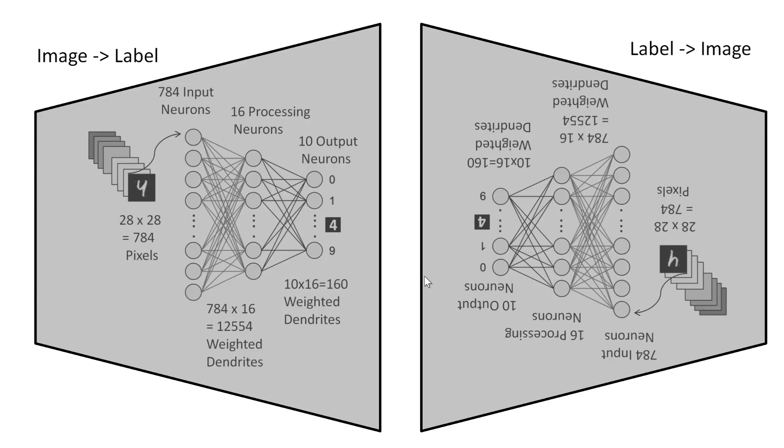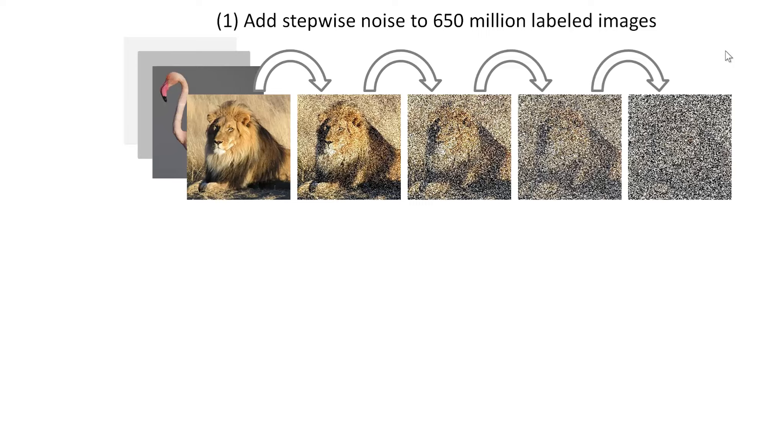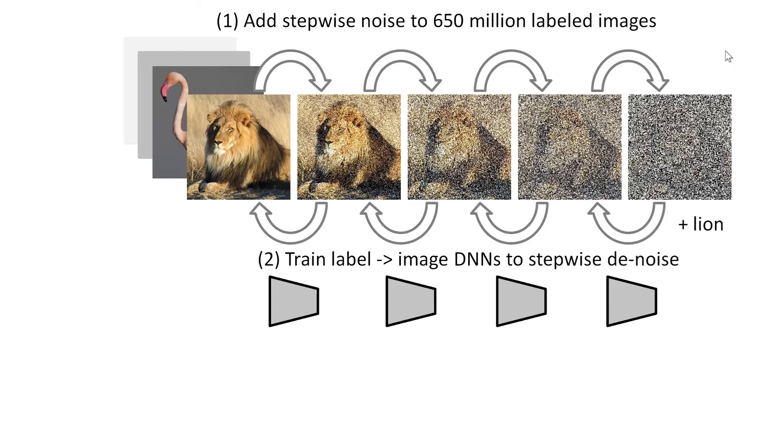So one thing we can obviously do, we can turn our training around. So we looked at predicting a label from an image. But we can also train it the other way around, right? We can give it a label and train it to make an image. And examples that are really quite impressive for this is DALI or stable diffusion. So most people would agree that that's AI. So what you do, you feed it a large number of images that are labeled, and just add stepwise noise. And then you train our little neural networks to denoise this from pure static back to a lion.